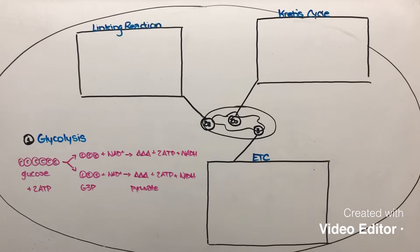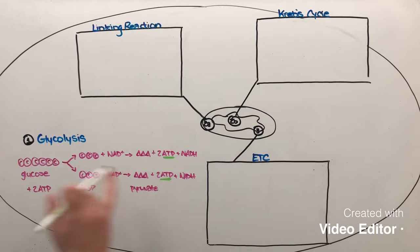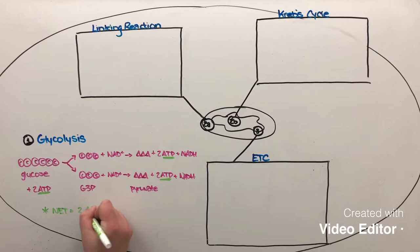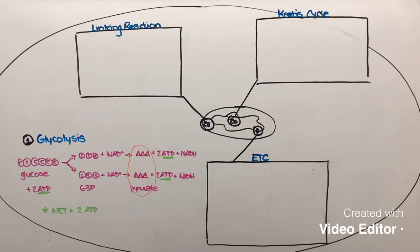The important molecules to keep track of are the ATPs. Since we produced two from each of those reactions, that gives us a total of four ATPs produced. However, since we needed an input of two ATPs to start the cycle, we actually have a net production of two ATPs from step one, glycolysis. One last thing to keep in mind: glycolysis doesn't use any oxygen, so it is considered to be an anaerobic process.